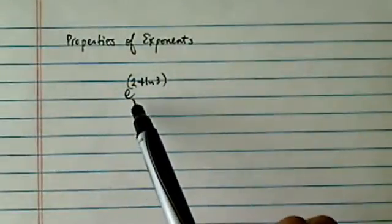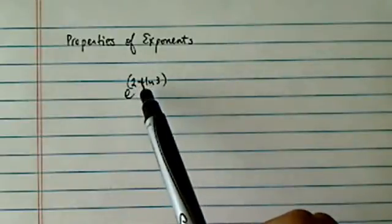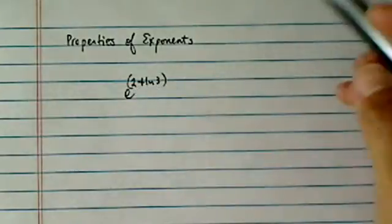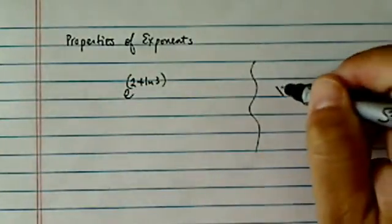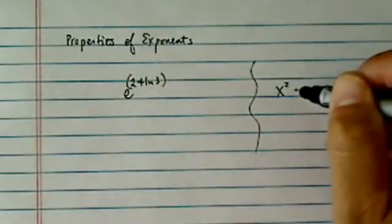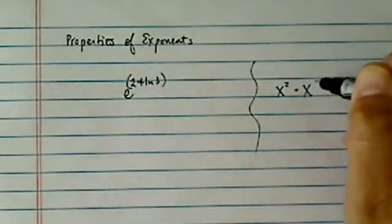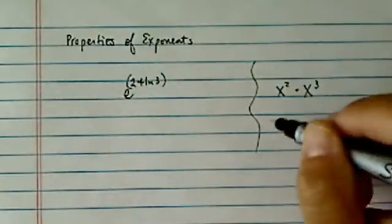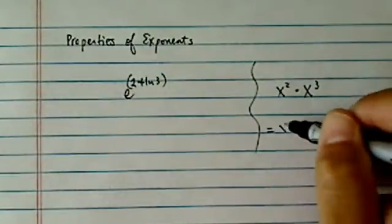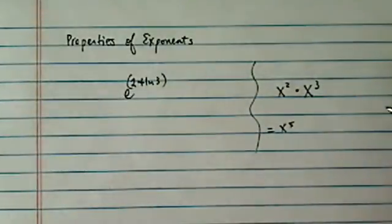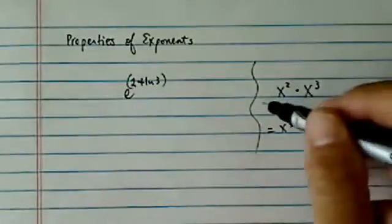Here we have e to exponents with addition in there. What you need to know is this: if I have x squared times x cubed, hopefully it's second nature to you.